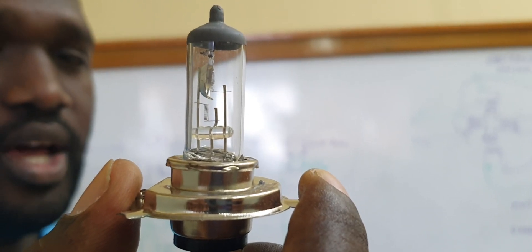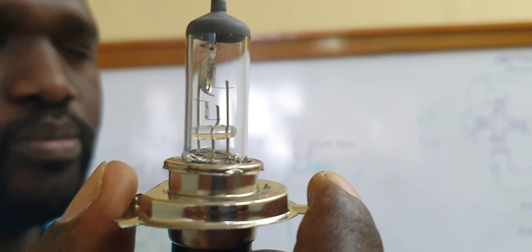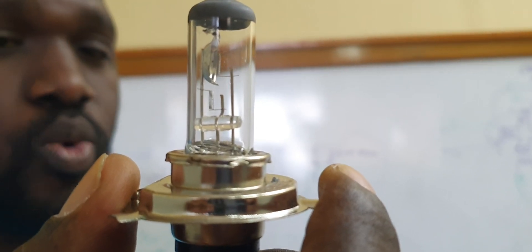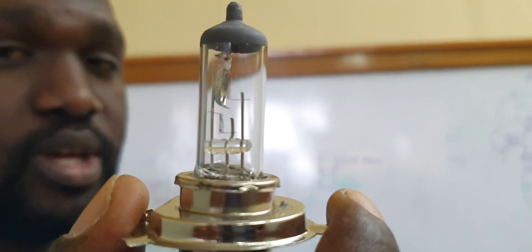When it comes down to our headlamp bulb and our brake light and park light bulb, these bulbs are what we call double filament bulbs.